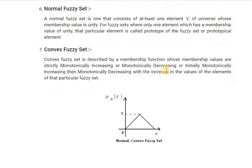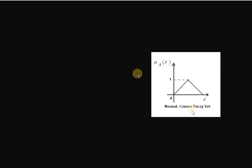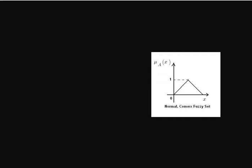First one is normal fuzzy set. Look at this figure below. This is the figure which illustrates normal fuzzy set. The definition says a normal fuzzy set is one that consists of at least one element x of universe whose membership value is unity. That means normal fuzzy set is a set where only one element has membership value of unity, that is one.